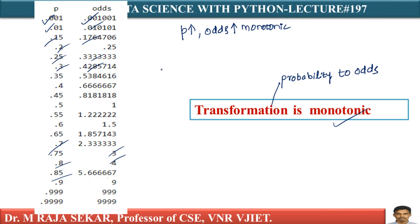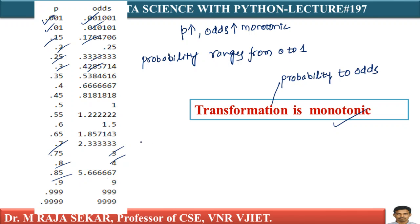Probability ranges from 0 to 1. If P equals 0, then odds is P by 1 minus P, which is 0 by 1 minus 0, equals 0. If P equals 1, odds becomes 1 by 1 minus 1, which is 1 by 0, equal to infinity.